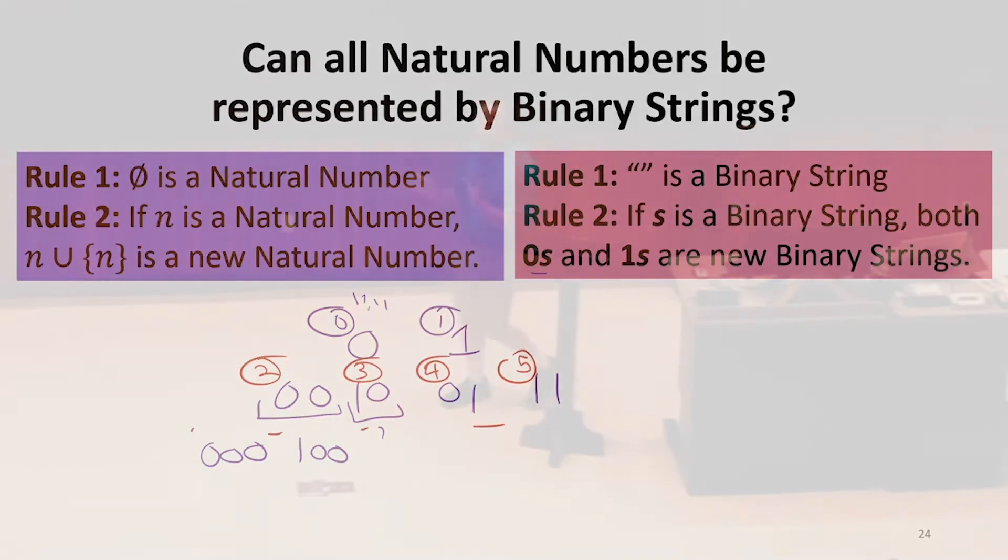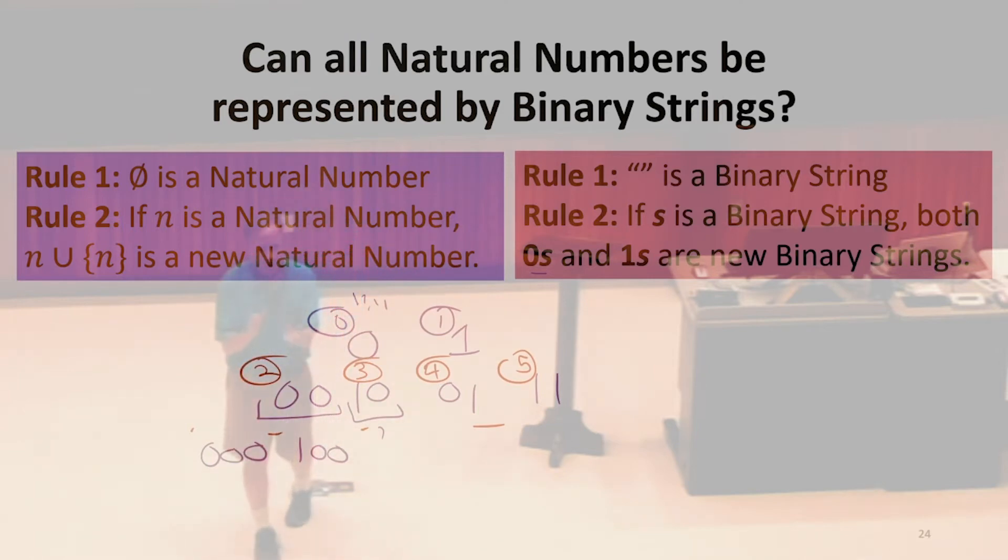We have a mapping between the binary strings. We can assign a natural number to each one. We're not going to run out. We can do it in a clear order.